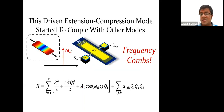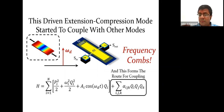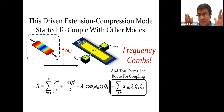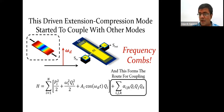What happened? This driven extension-compression mode — I'm trying to drive a mode at ω_d, which is close to the resonance mode, and that mode starts to couple with other modes through a particular nonlinear coupling term. That's the route for coupling to other modes, and then you get frequency combs. In this single-driven-mode case, there is also a frequency comb spacing, and that spacing is actually determined by how far ω_d is away from ω₀ — the separation of ω_d and ω₀ controls the comb spacing.